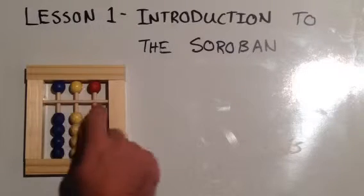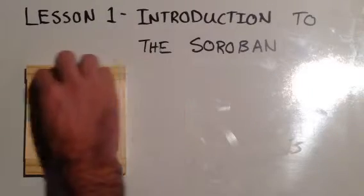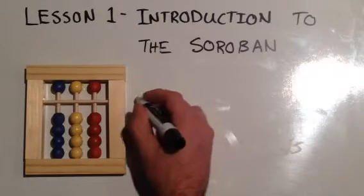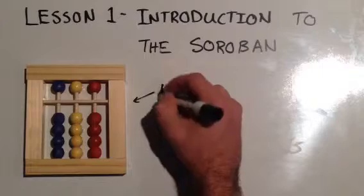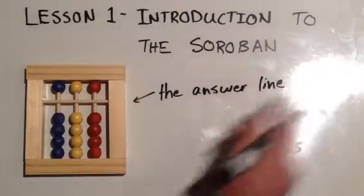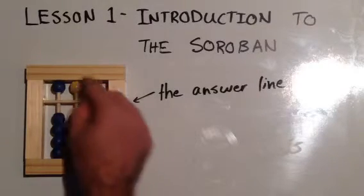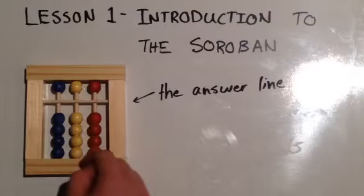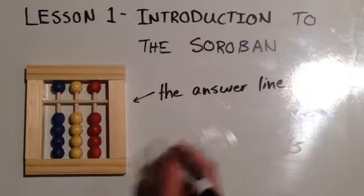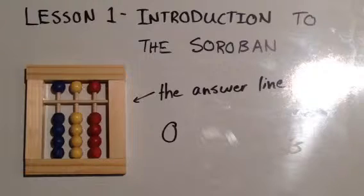First, let's look at this middle bar right here that separates the lower beads from the upper beads. This middle bar is called the answer line. When none of the beads are touching the answer line - none of the lower beads, none of the upper beads - we are at zero. So currently we are at zero with this abacus.